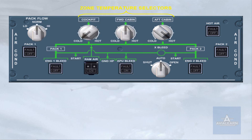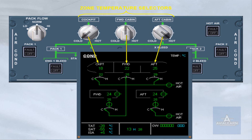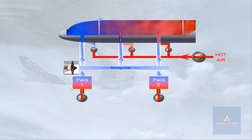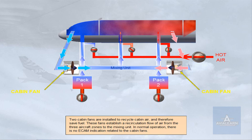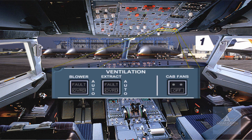The zone temperature selectors are used to adjust the required temperature for an associated zone. Two cabin fans are installed to recycle cabin air and therefore save fuel. These fans establish a recirculation flow of air from the three aircraft zones to the mixing unit. In normal operation, there is no ECAM indication related to the cabin fans. The cabin fans push button switch on the ventilation panel controls the cabin fans, and can be used to switch the fans off in response to an ECAM procedure.